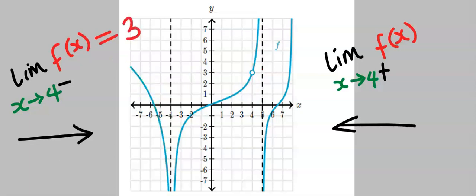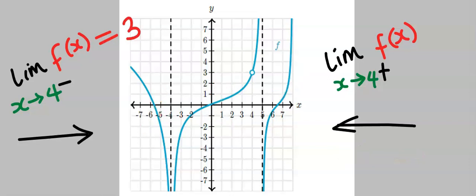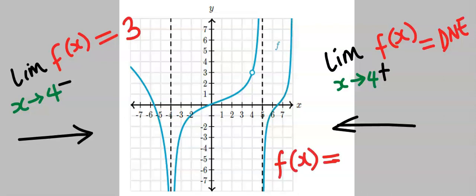Next, approaching f(x) from the right-hand side, the right-hand line comes from infinity and goes towards infinity, so the approach from the right does not exist. Hence we conclude that the limit of f(x) does not exist.